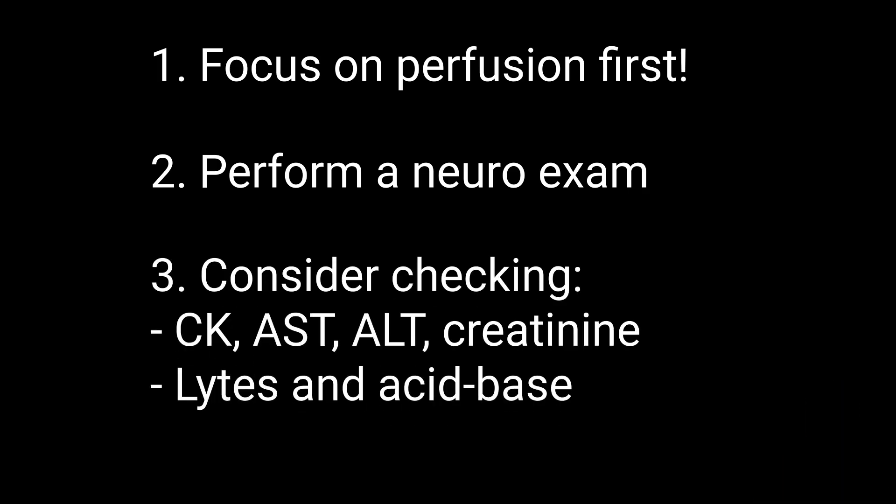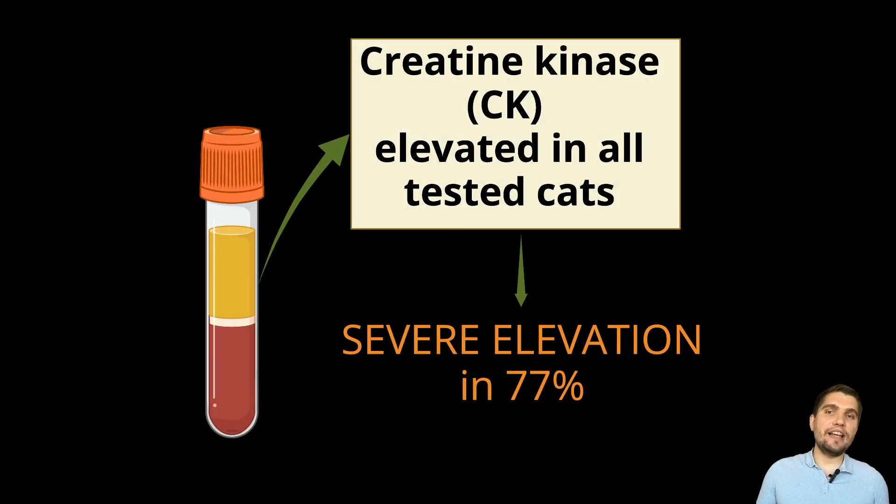You may consider checking key biomarkers of muscle and renal injury, such as creatine kinase or CK, AST, ALT, and creatinine, along with other blood work parameters, including an acid-base status. In the current study, CK levels were elevated in all 22 cats tested, with the majority of 77% of cats showing severely increased CK activity.